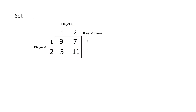For the solution, first we have to find row minima — that is the minimum of each row. For 9 and 7, the minimum is 7, and for 5 and 11, the minimum is 5. After finding row minima, we have to find column maxima. The maximum of the first column is 9 (from 9 and 5), and from 7 and 11, the maximum value is 11.